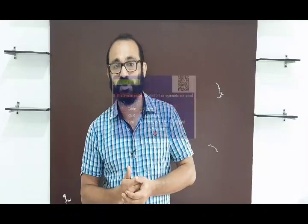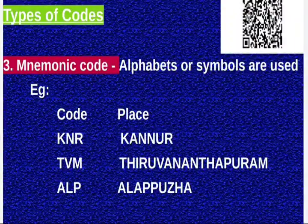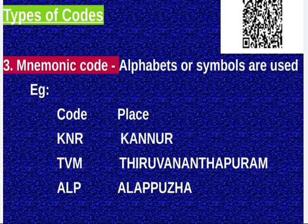The third type of code is the mnemonic code, where alphabet symbols are used to represent items. For example, KR, TVM, and ALP could be used as mnemonic codes. To summarize, the three types of codification are: 1) sequential code, 2) block code, and 3) mnemonic code.